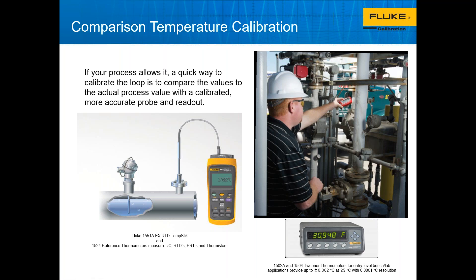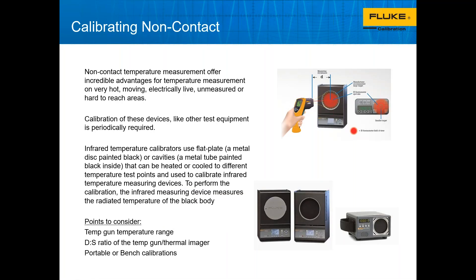There are also ways to calibrate non-contact temperature devices using what we call a black body source. These devices heat up to a surface that is considered a black body — 100% emissive — and you use a temperature gun or thermal imager to make a spot measurement on that surface. The controller tells you the actual temperature, and you compare that to your temperature gun reading. Different black body sizes are available — a small handheld portable one with roughly a 2.5 to 3-inch spot, and larger ones closer to 8 or 9 inches in diameter. Knowing your distance-to-spot ratio is important.